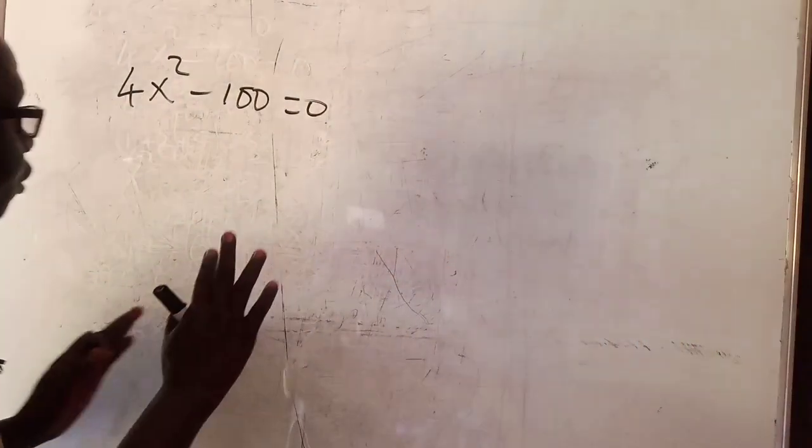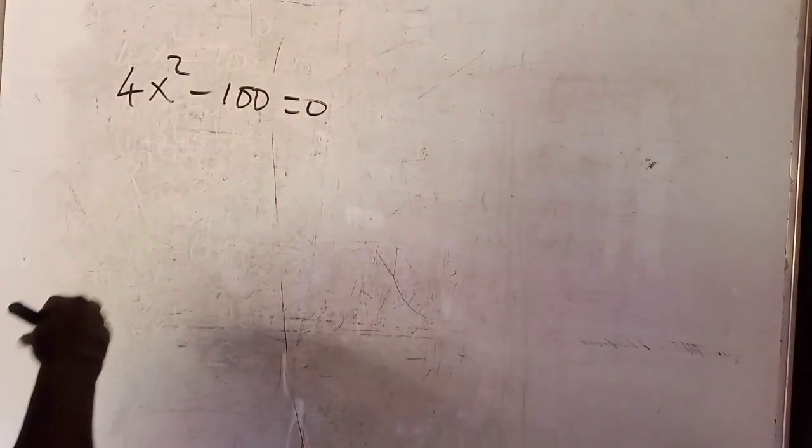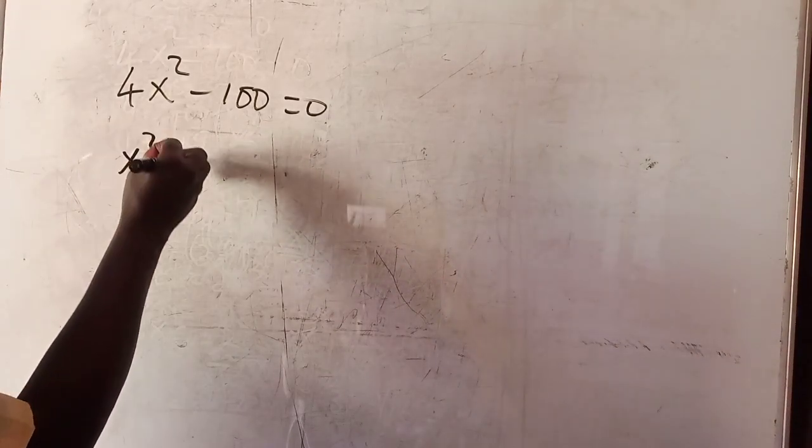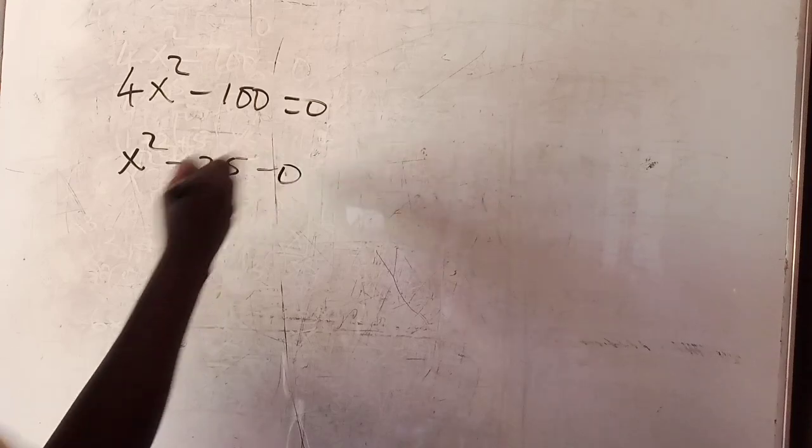This is a quadratic equation. If we divide through by 4, we get x² - 25 = 0.